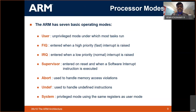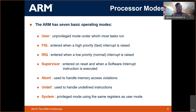In the ARM microprocessor there are different modes: user mode, fast interrupt mode (FIQ), interrupt mode (IRQ), supervisor mode, abort mode, undefined mode, and system mode — and several others as well. Each mode is distinct, and each has its own register bank.